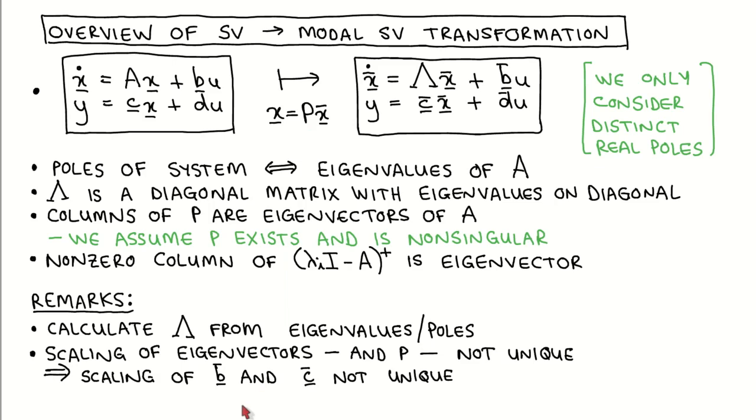Since the scaling of the eigenvectors are not unique, the scaling of the columns of P are also not unique. This means that the scaling of vector B bar and vector C bar will not be unique. These vectors will therefore not necessarily be the same as the ones we previously used for the transfer function to modal canonical form transformation.